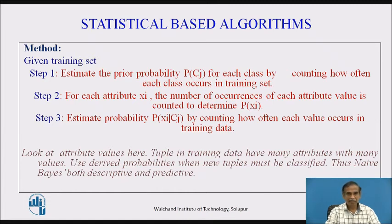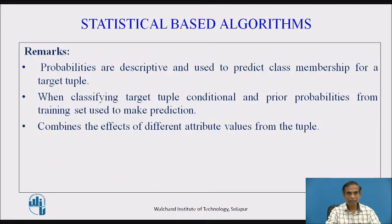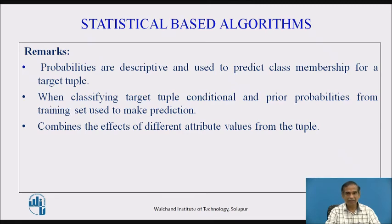The Naïve Bayes approach is both descriptive and predictive. The probabilities are descriptive and used to predict class membership for a target tuple. When classifying a target tuple, conditional and prior probabilities from the training set are used to make a prediction. It combines the effect of different attribute values from the tuple.